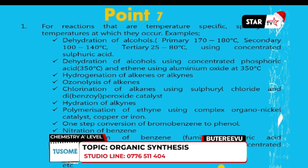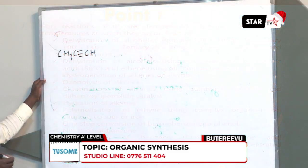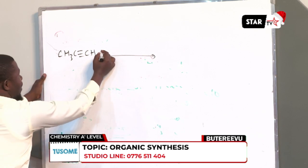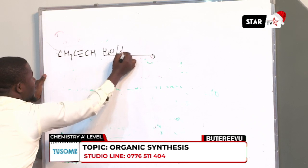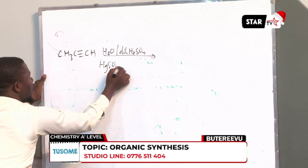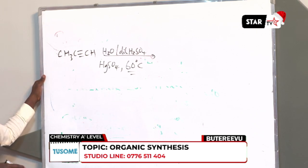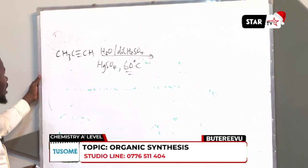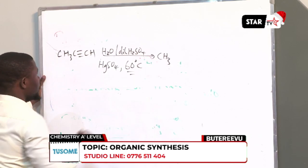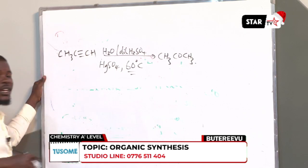The next reaction involves hydration of alkenes. If you want to hydrate a specific alkene such as propene, it is also a temperature-specific reaction. You use water in the presence of dilute sulfuric acid and mercuric sulfate catalyst at a temperature of 60 degrees Celsius. This hydration is a temperature-specific reaction, and this reaction will give you propanone — a ketone as your product.